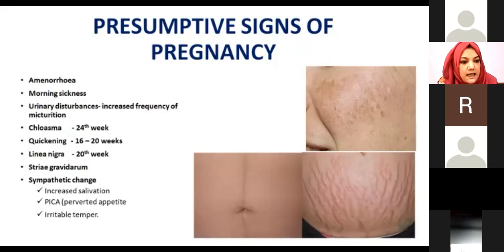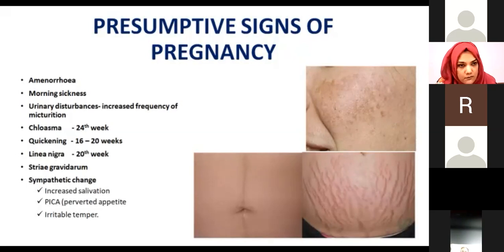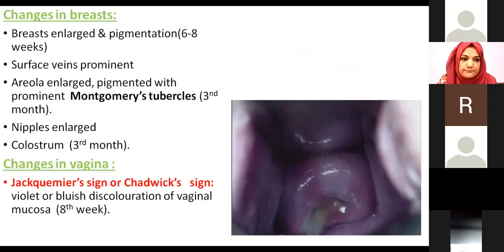Then there are sympathetic changes: some females have increased salivation, some have a perverted appetite known as pica — the desire to eat unusual substances like chalk. There are also mood swings, irritable temper, and other emotional changes. These are all presumptive signs. There are also changes in the breast.